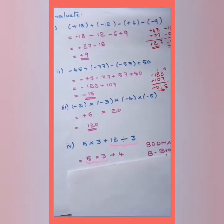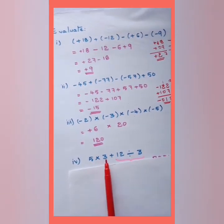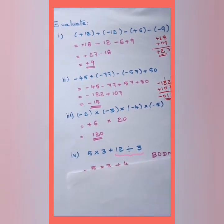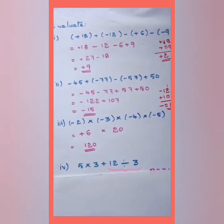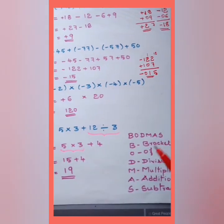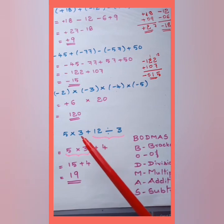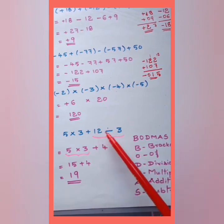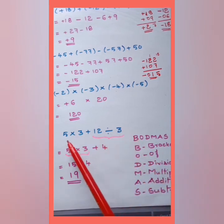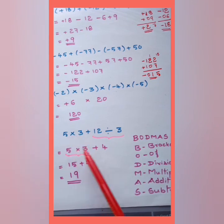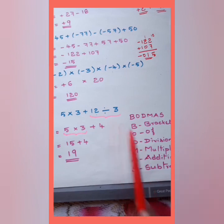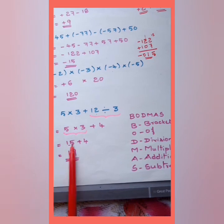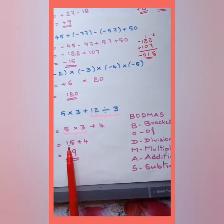Let's evaluate 5 × 3 + 12 ÷ 3 using BODMAS. B = Bracket (none here), O = Of, D = Division, M = Multiplication, A = Addition, S = Subtraction. First, perform division: 12 ÷ 3 = 4. The expression becomes 5 × 3 + 4. Next, multiplication: 5 × 3 = 15. Then addition: 15 + 4 = 19. The answer is 19.